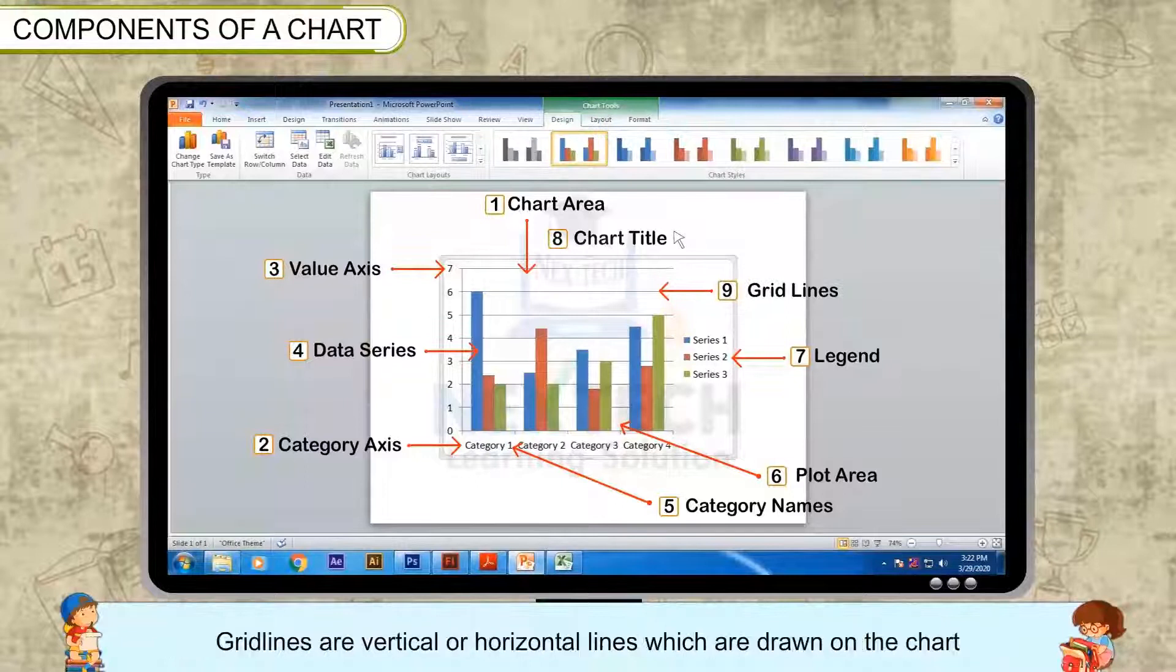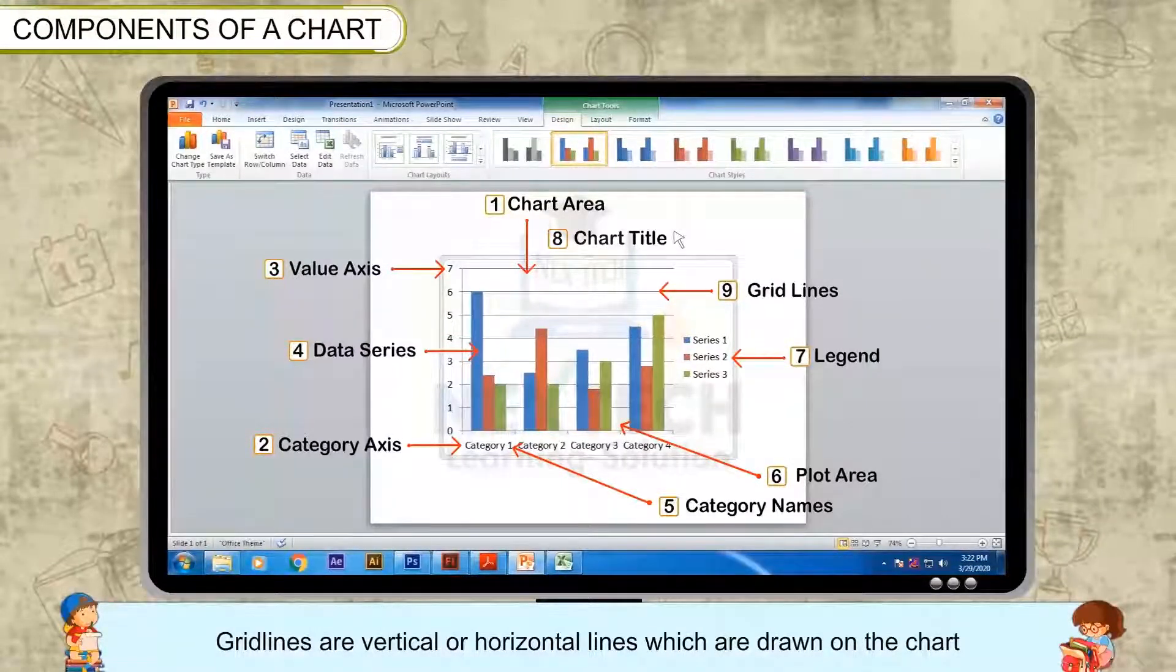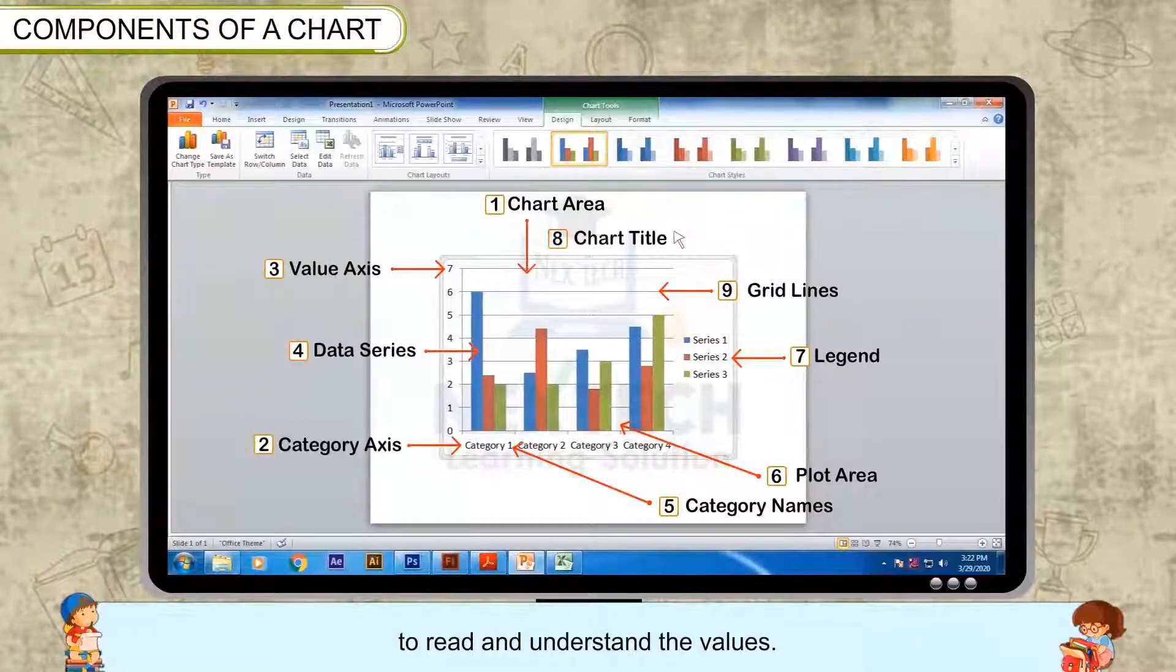Grid lines: Grid lines are vertical or horizontal lines which are drawn on the chart to read and understand the values.